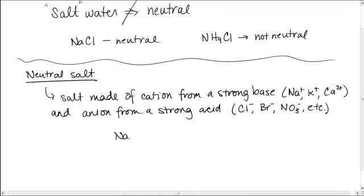So, for example, NaCl, that comes from a strong base. This comes from a strong acid. It's neutral. You know, KBr, this comes from a strong base. This comes from a strong acid. It's neutral. You know, CaBr2, from a strong base, from a strong acid. It's neutral.